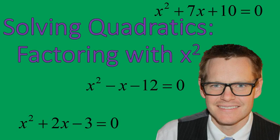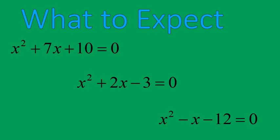Hello, this is Mr. Buffington, and we are solving quadratic equations today. The ones we're looking at specifically have x squared as the first term, so there's no coefficient, no number in front of it, just plain x squared, and we're going to be solving that using factoring. We'll look at three examples, and then I'll give you practice problems to solve on your own. Let's take a look at our first example.